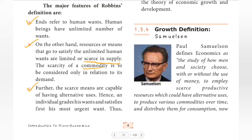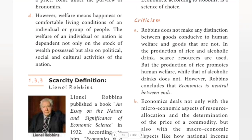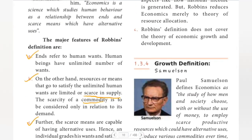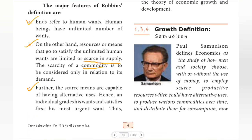Third, the scarce means are capable of having alternative uses. Hence, an individual grades his wants and satisfies first his most urgent want. Thus, economics according to Robbins is the science of choice. So the third feature is the science of choice.